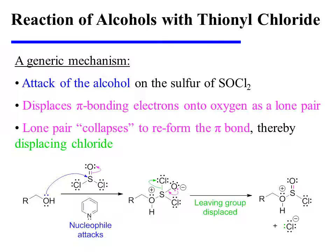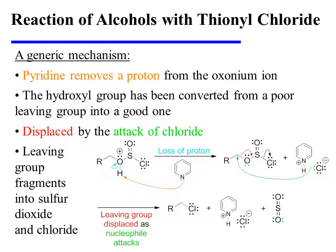The reaction begins with the attack of the alcohol on the sulfur of thionyl chloride. This displaces pi-bonding electrons onto oxygen as a lone pair. That lone pair then collapses to reform the pi-bond, thereby displacing chloride. At this point, pyridine removes a proton from the oxonium ion.